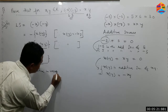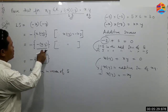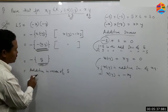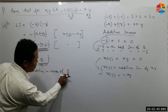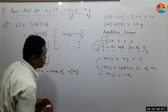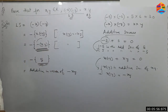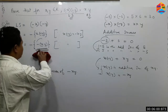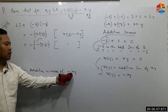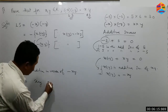The additive inverse of 5 is the additive inverse of 5. The additive inverse of 6 is the additive inverse of 6.